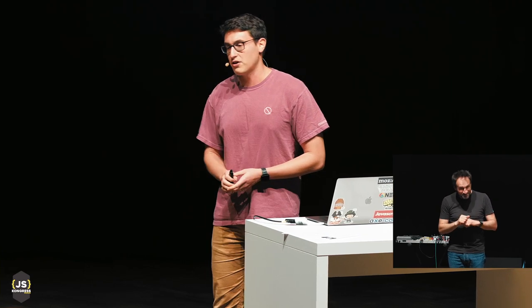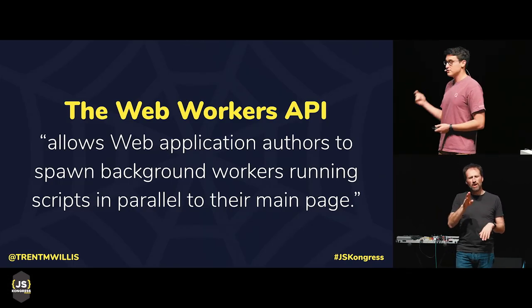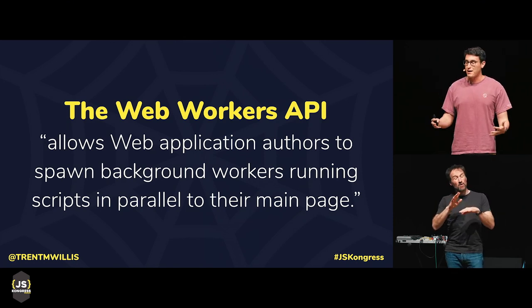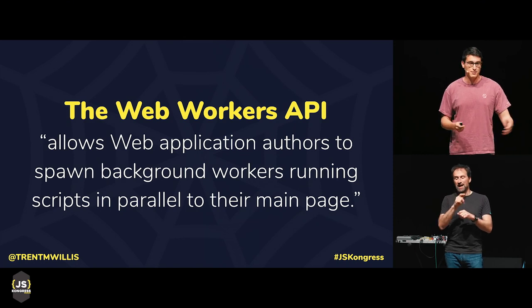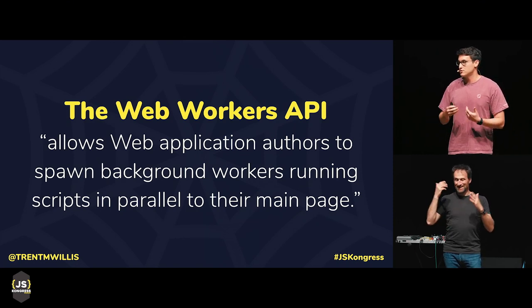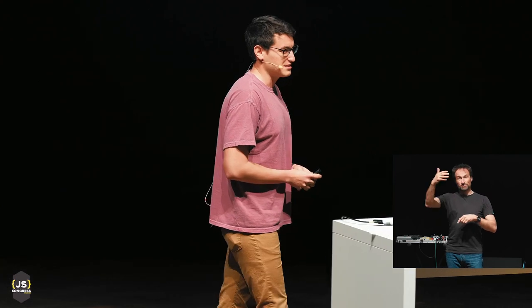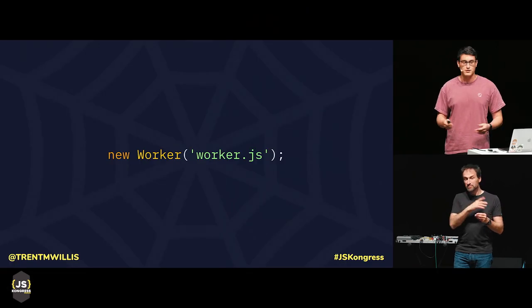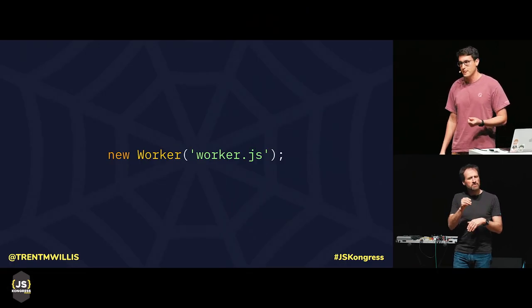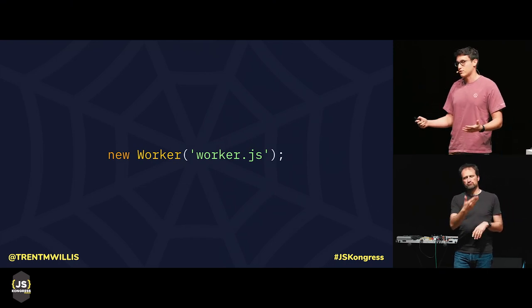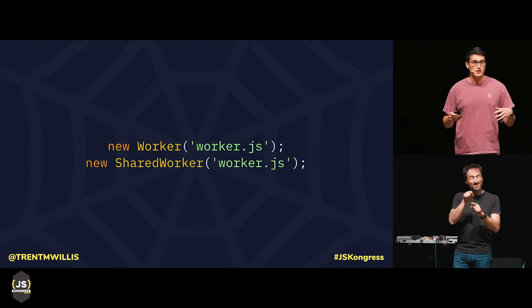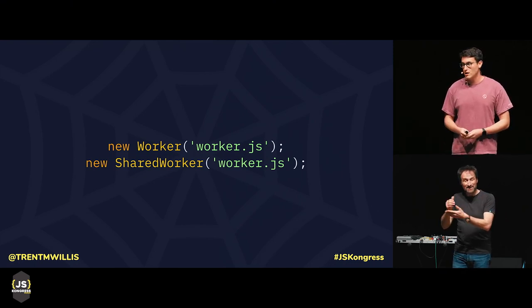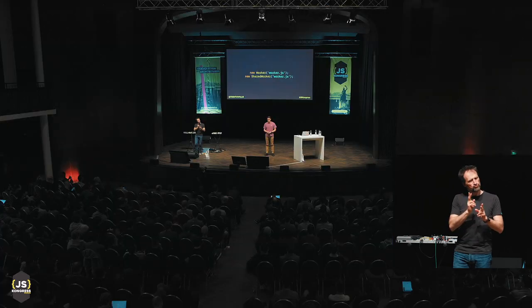Let's start from the very basics. What is the Web Workers API? The Web Workers API allows web applications to spawn background worker processes running in parallel to their main page. In essence, it brings multithreading to the web. The API is not that verbose — it's pretty limited. You start by simply creating a web worker using the Worker constructor and giving it a file path to load. Calling this creates what's known as a dedicated worker, which stands in contrast to a shared worker that can be used by more than one page. We're going to focus on dedicated workers today because they're more common and simpler to understand.